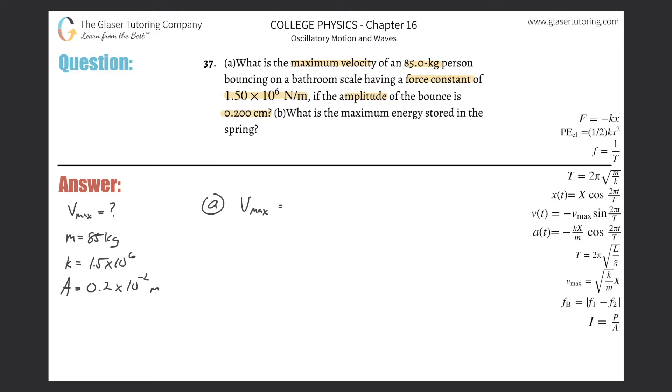The maximum velocity equals the square root of the force constant divided by the mass that is bouncing, multiplied by capital x, which is the maximum displacement—in other words, the amplitude. I'm going to substitute A in there.